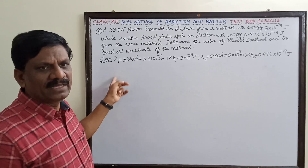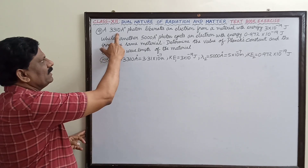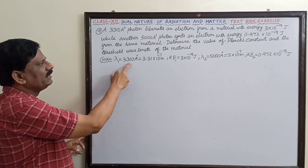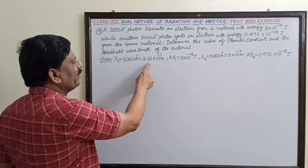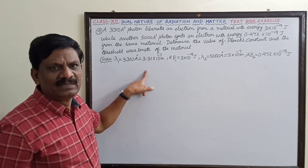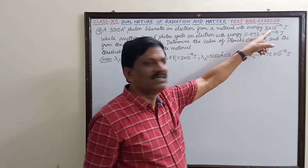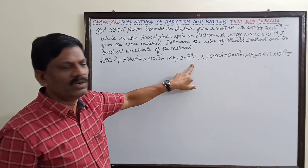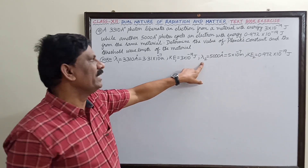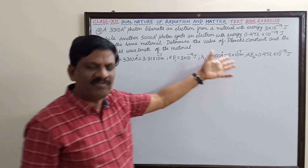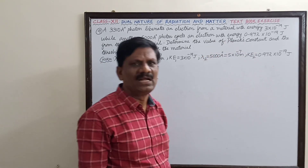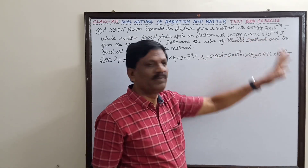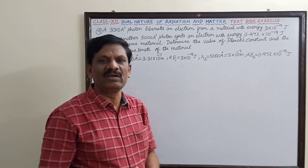We will summarize the given quantities. The wavelength of the first case photon is λ₁ = 3310 angstrom, or 3.31×10⁻⁷ meter, and the corresponding kinetic energy of the photoelectron is KE₁ = 3×10⁻¹⁹ joule. In the second case, λ₂ = 5000 angstrom, or 5×10⁻⁷ meter, and the corresponding kinetic energy KE₂ = 0.972×10⁻¹⁹ joule. The work function φ₀ remains the same.